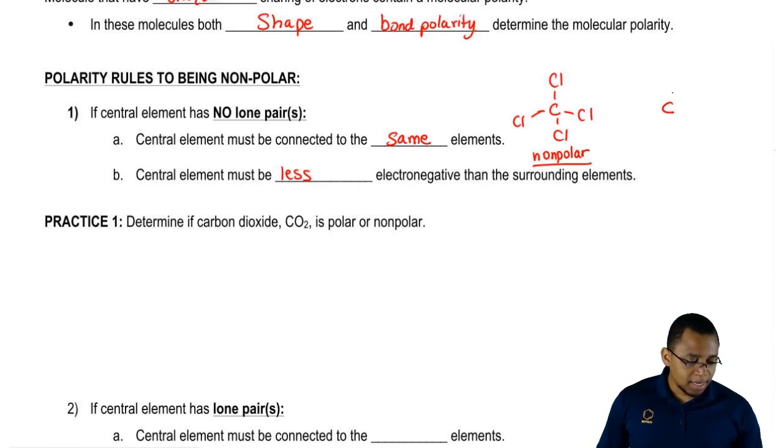Let's say I did carbon in the center and I do this instead. Now the central element doesn't have all the same groups around it, so it breaks rule 1A and automatically since it breaks any of the rules, it's going to be polar.